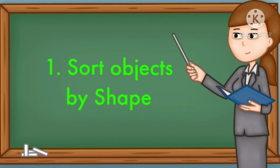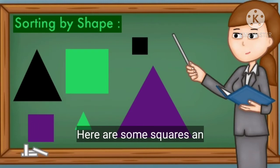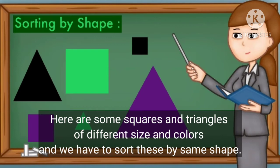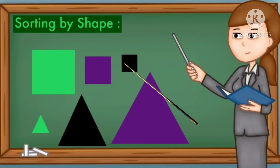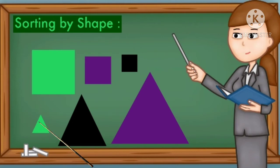Number one: sort objects by shape. Here are some squares and triangles of different size and color, and we have to sort these by the same shape. This is a square, this is also a square, and this is also a square — so we have sorted all squares. This is a triangle, this is also a triangle, and this is also a triangle — so we have sorted all triangles.